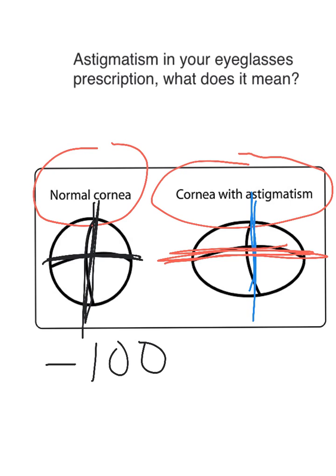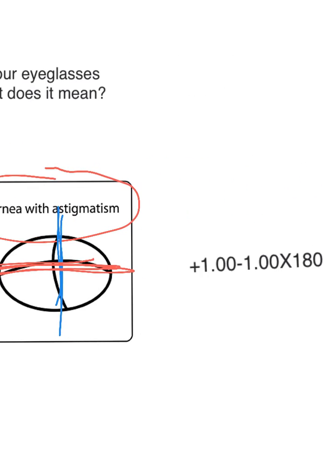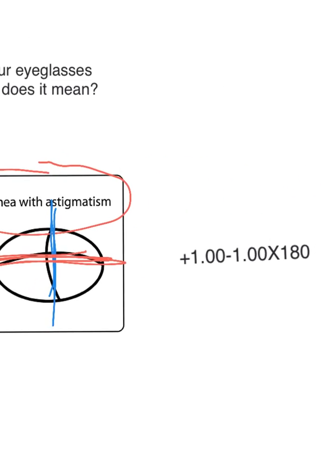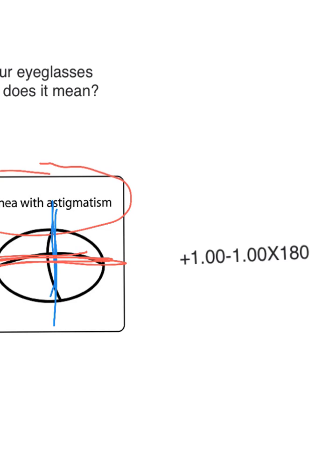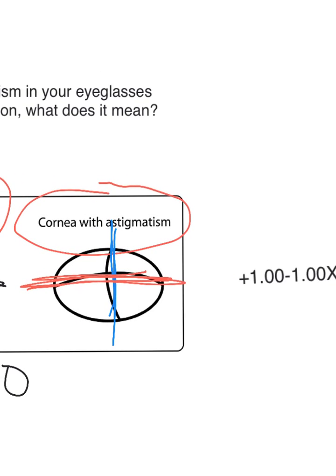In a cornea with astigmatism, you have three numbers, like this. Now, these numbers look scary, but what it tells you is the power of each individual meridian.